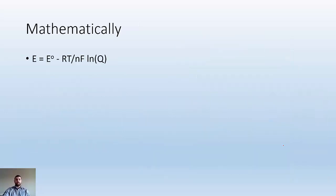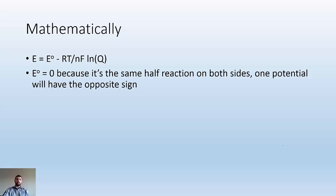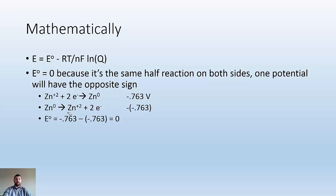Mathematically, we know E equals E naught minus RT over NF times ln Q. E naught is going to be zero because it's the same half reaction on both sides. One potential will be the same, just the opposite sign. The reduction potential of zinc at the cathode, the opposite happens at the anode. Same magnitude, different sign, which means overall potential is zero. But you can still get a voltage if there's a concentration difference.